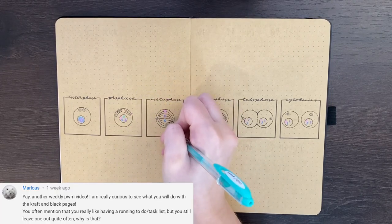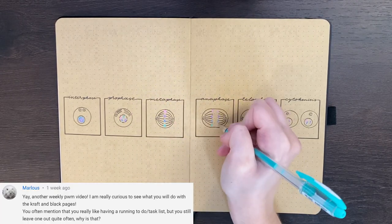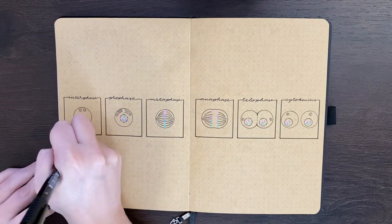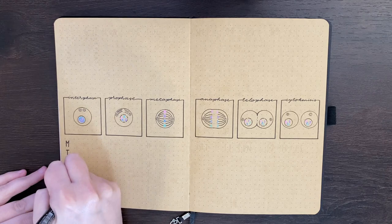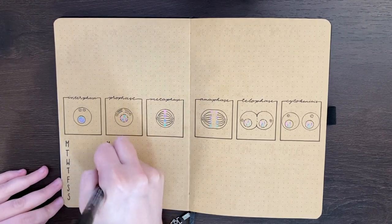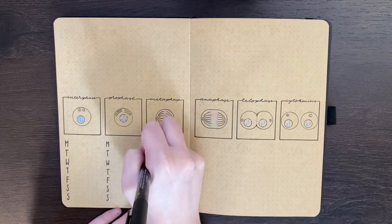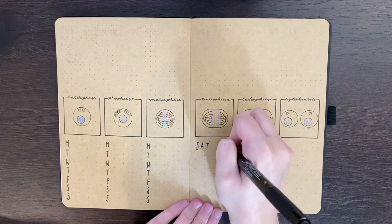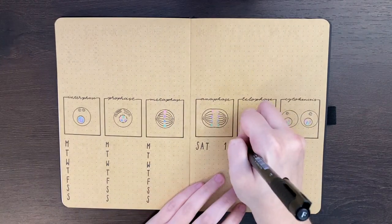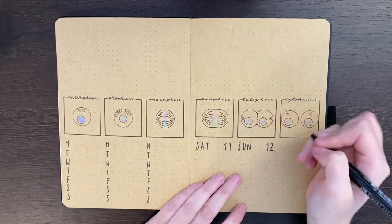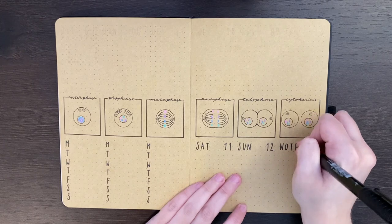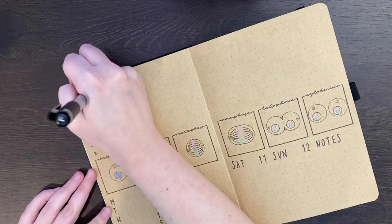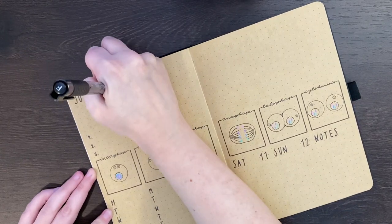Our next question comes from Marluz, who asked, you often mention that you really like having a running to-do slash task list, but you still leave one out quite often. Why is that? Probably because I'm a bit of a masochist, it seems. The notes section on this layout and my last one kind of doubles as my running task list. It obviously doesn't have as much space as some of the task lists that I usually like, but this month in particular, what I'm trying to make use of is a monthly running task list, rather than putting them on my weeklies. I also want to get a bit better at scheduling when I'm going to do things, which is why I'm giving myself less space on each week to write down those running task lists, so that then things don't just get pushed to the end of the week.